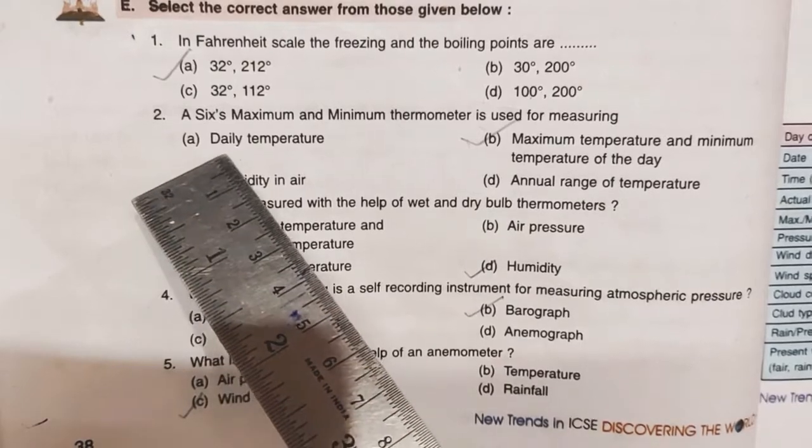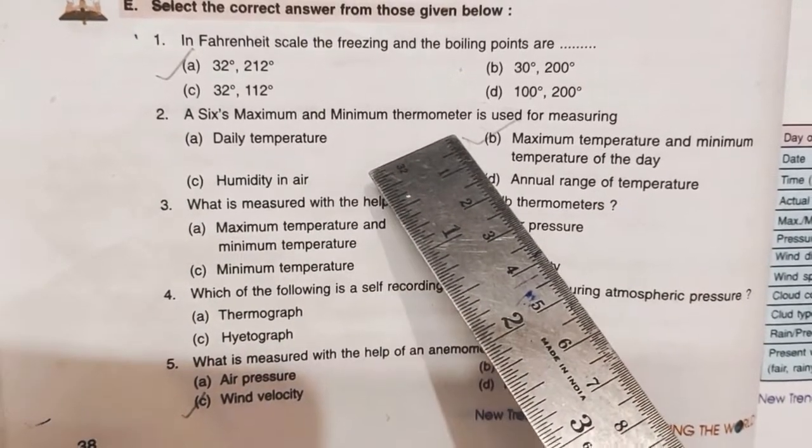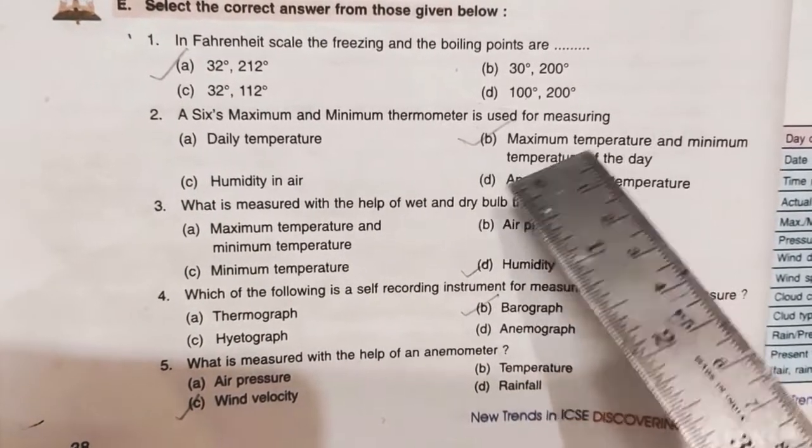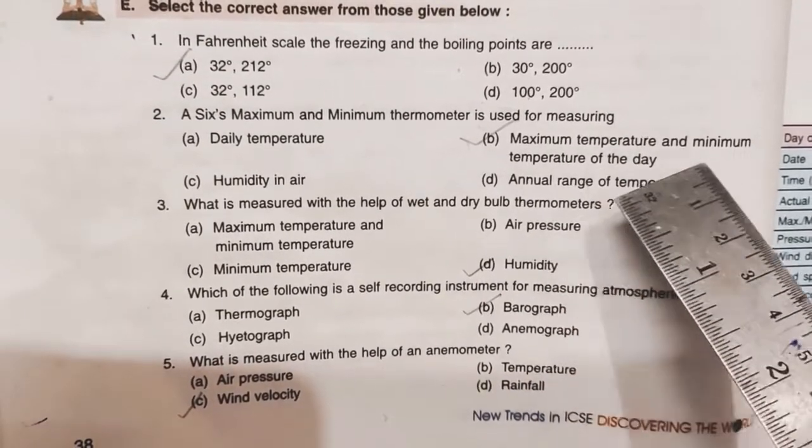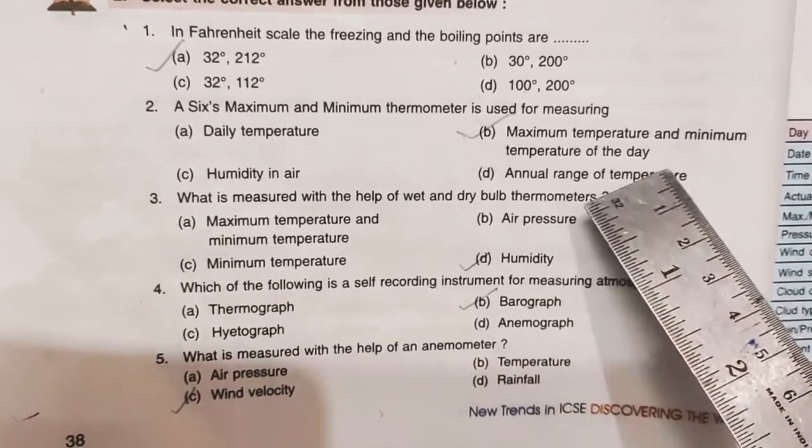Second question: Six's maximum and minimum thermometer is used for measuring. B is correct: maximum temperature and minimum temperature of the day.